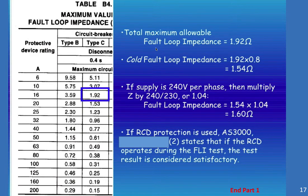So you can see here our fault loop impedance, the maximum available, 1.29 ohms. Our cold fault loop impedance is 1.92 times 0.8. So if the supply voltage is 240 volts per phase, then we multiply the Z by 240 or 230 or 1.04. So the earth loop impedance would be 1.54 multiplied by 1.04 equaling 1.6 ohms.